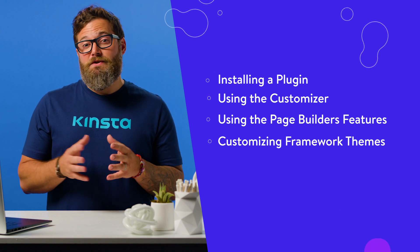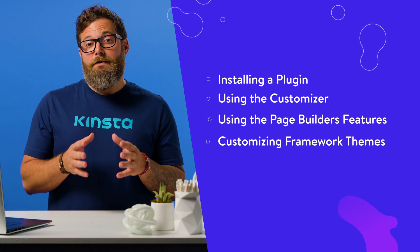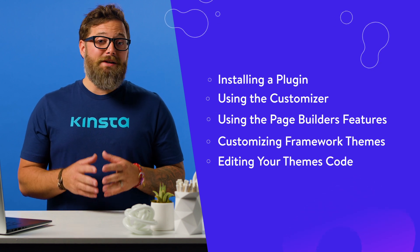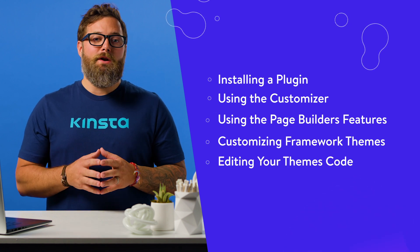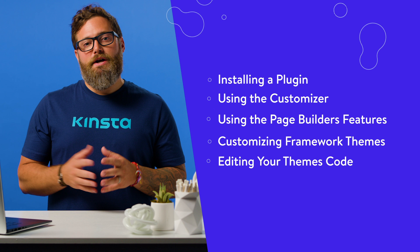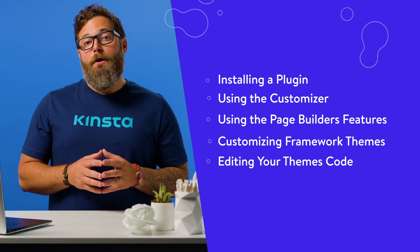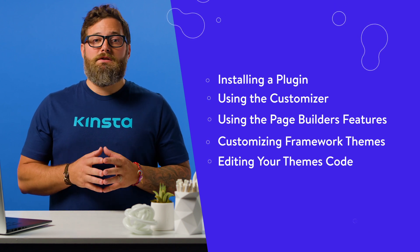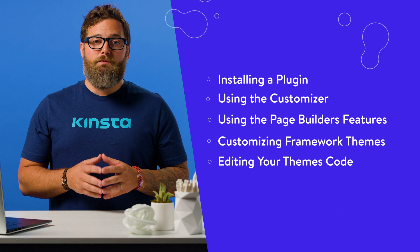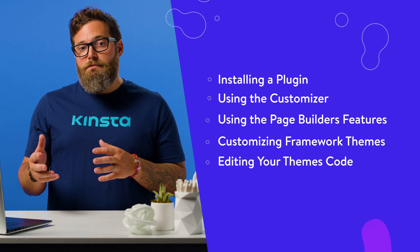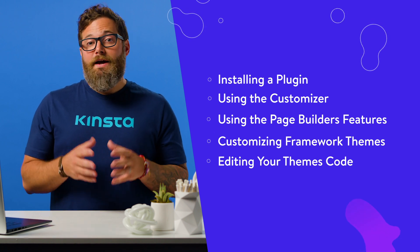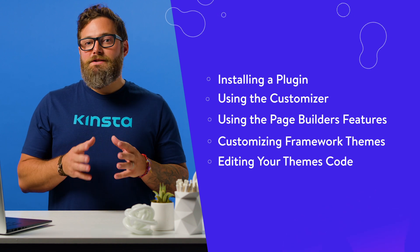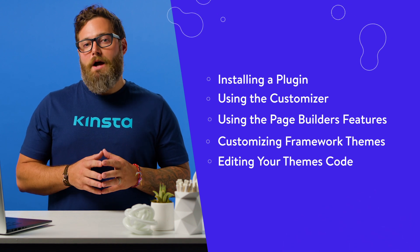If your theme is specific to your site and you're comfortable doing it, edit the theme's code directly. If you want to edit the code of a third-party theme, create a child theme. If you want to edit the code, you'll have a number of options available to you, from using the block editor, to the customizer, right to editing the files. We'll look at them all in this video, but let's start with the simplest option — installing a plugin.